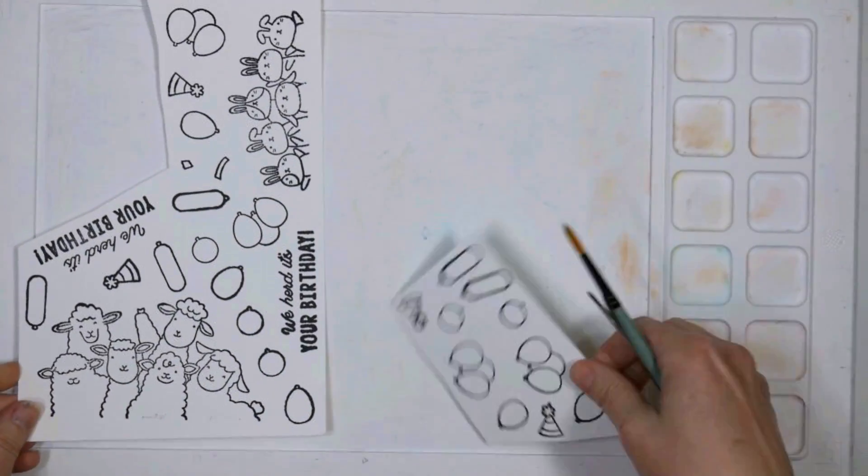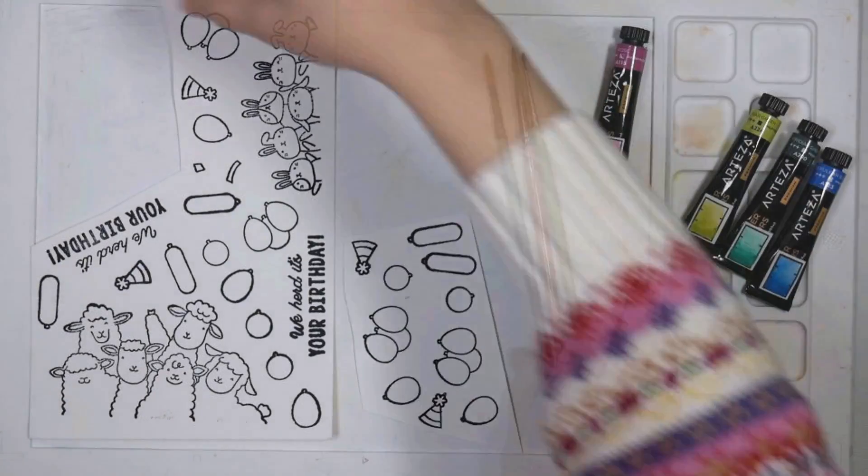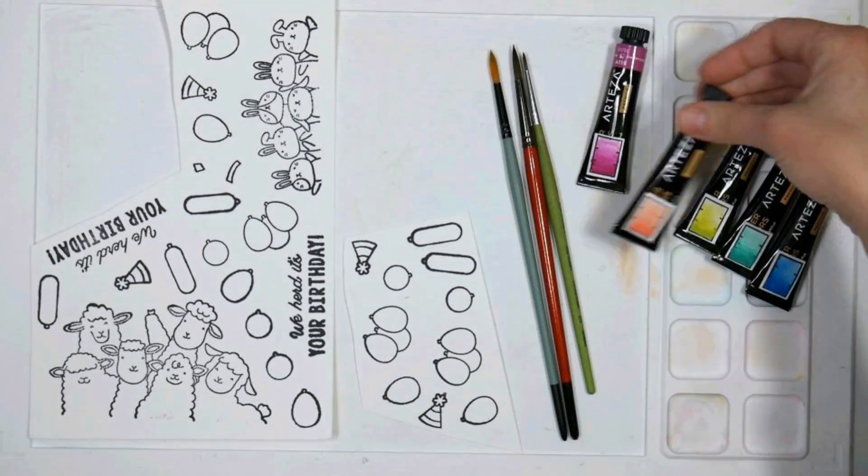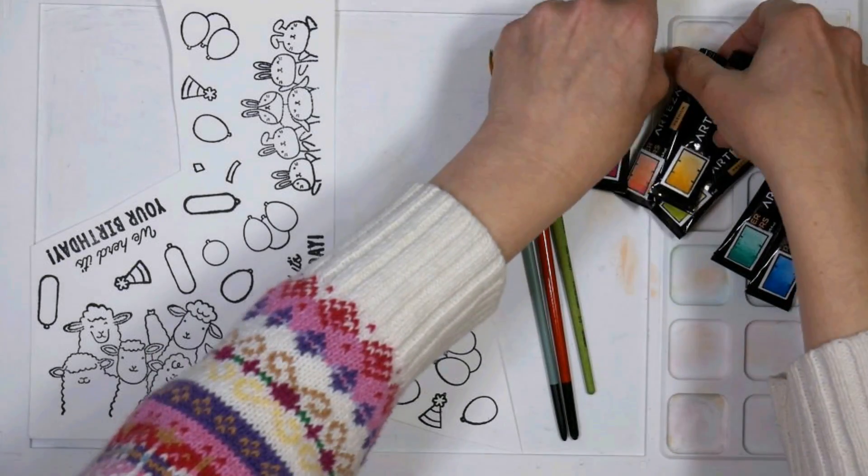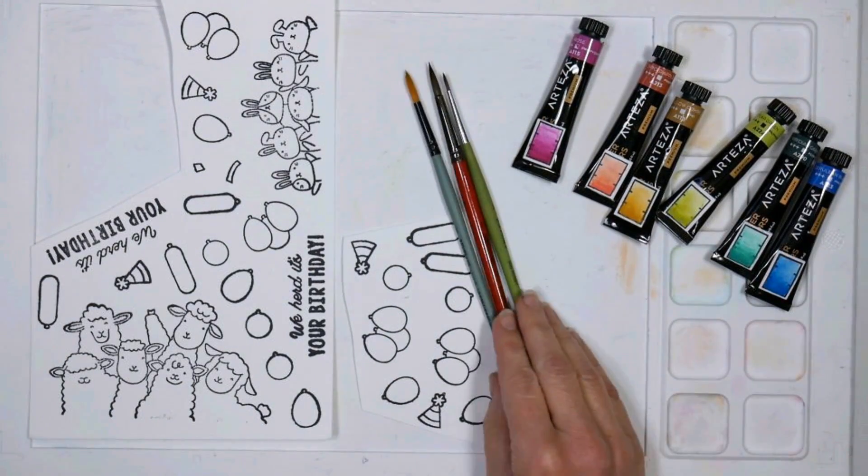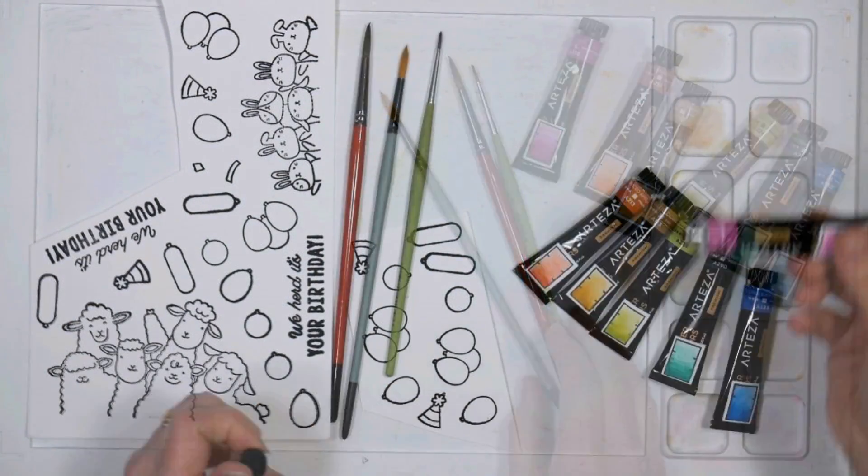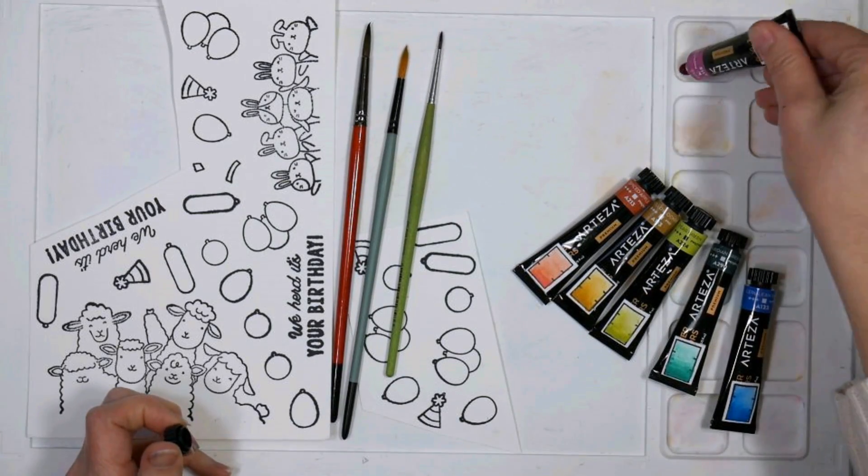For my project I decided to use the We Heard stamp set and die set from Waffle Flower. This is a fairly new set and it's really fun for birthday parties, especially if you have to give a card from a bunch of people like at the office, but it's so fun and cute it would be applicable for kids parties as well.